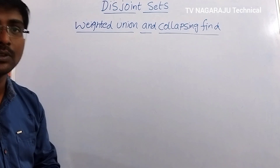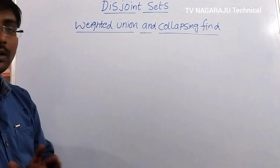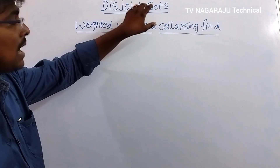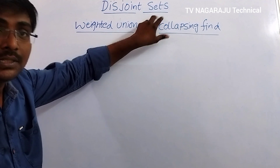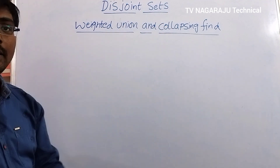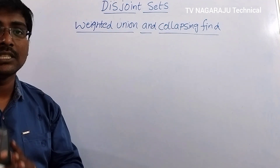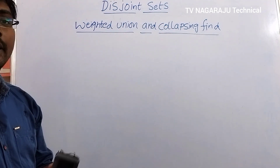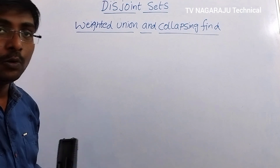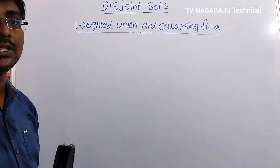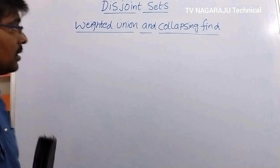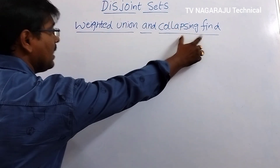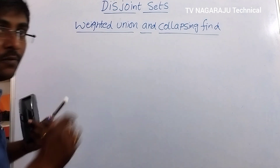Welcome to our channel. Our topic is disjoint sets. Under disjoint sets, we already discussed simple union and simple find operations. To improve the efficiency of the algorithm, we are moving into weighted union and collapsing find.